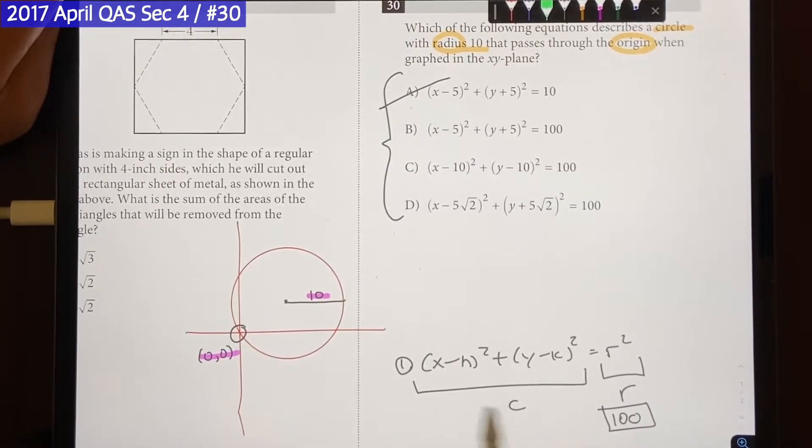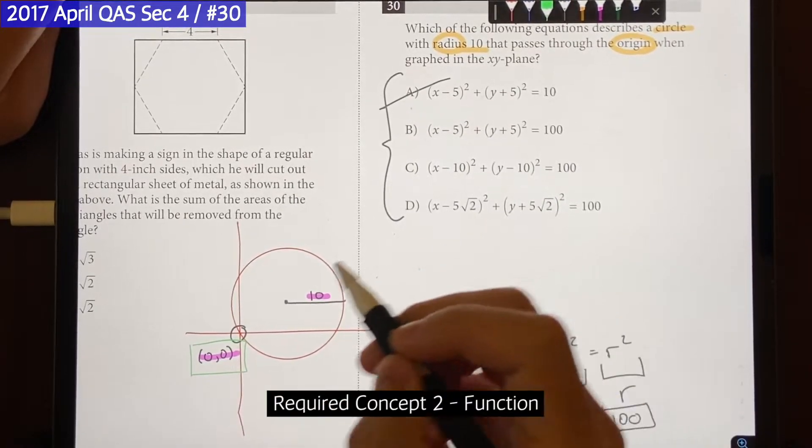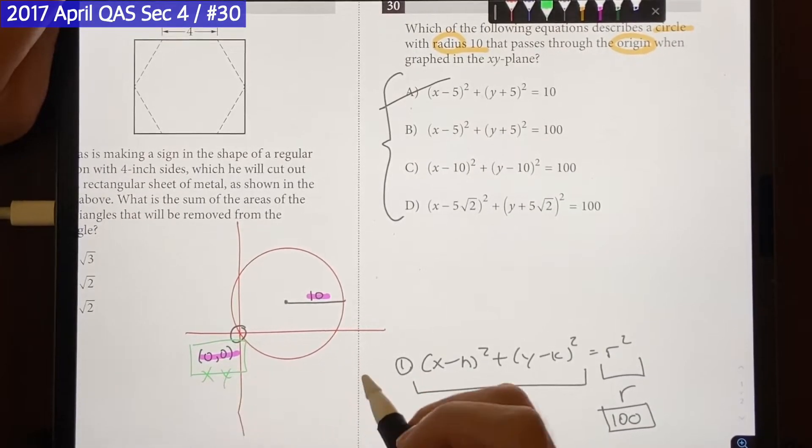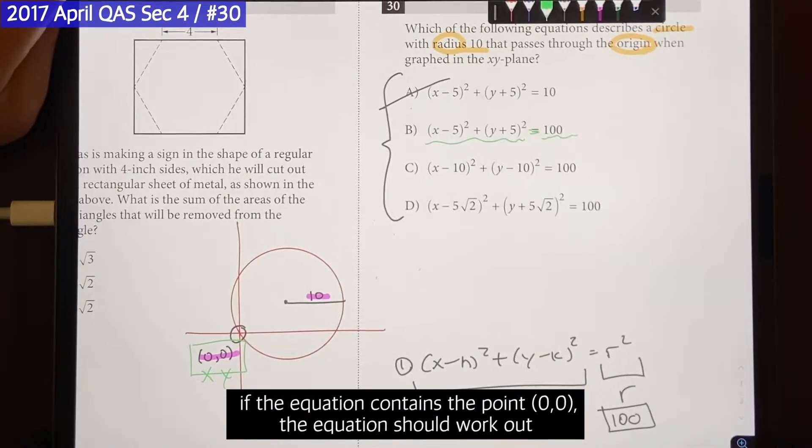And from the three choices how can we tell which one's the correct one? Well the correct equation should contain the point 0, 0. And how we can check whether it contains that point or not is by plugging in 0 for x and 0 for y. If it does contain that point then the equation should be equal to the right side. So let's try it out.